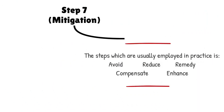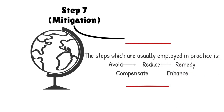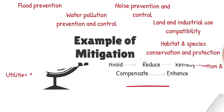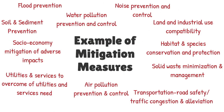Step 7 is about mitigation. This step is very important because the identified negative impacts are alleviated. The steps usually employed in practice are: avoid, reduce, remedy, compensate, and enhance. The step-by-step mitigation measures are employed to eliminate, reduce, and compensate all identified significant impacts. The details of mitigation measures adopted are very important to be carried out without negligence to avoid any future problems. This step is also significant in recognizing unexpected impacts and remedial actions to be taken, and to verify whether the impacts that arise are the same as those in the prepared report.